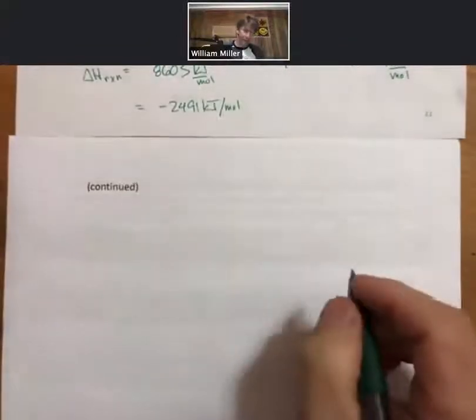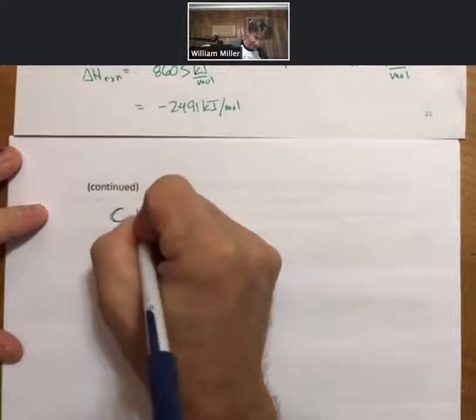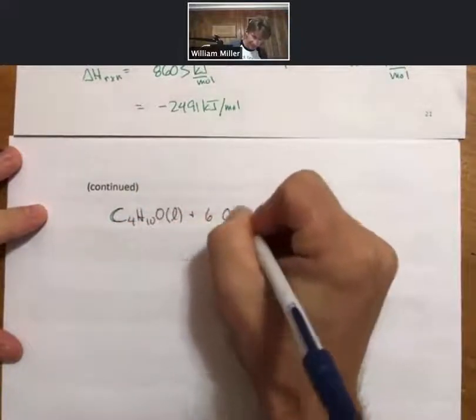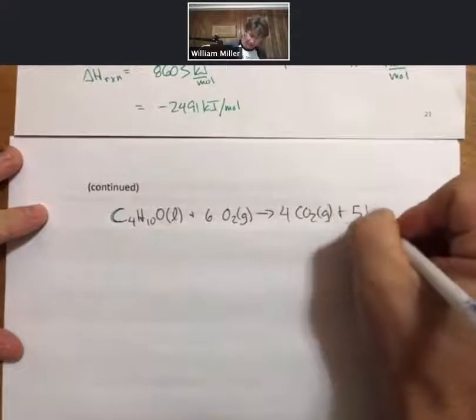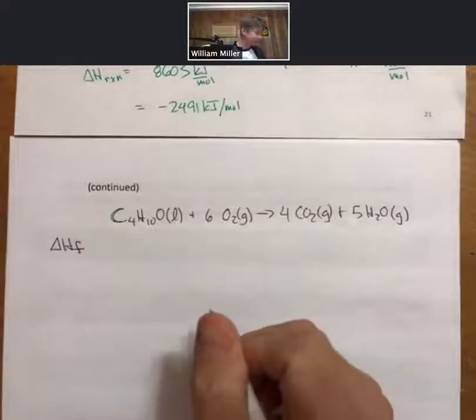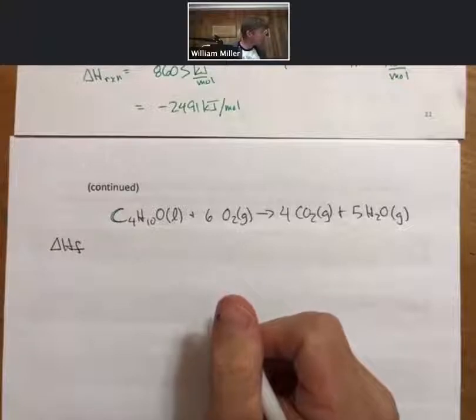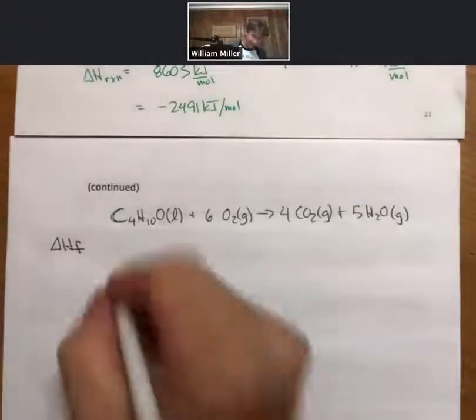Now let's see how we do compared to the other method of doing it, which is using ΔHf values. C4H10O plus 6 O2 gas goes to 4 CO2 gas plus 5 H2O gas. Now we're going to look up the ΔHf values and I'm not sure if C4H10O is on my list, but I definitely looked it up somewhere so I could do this problem.